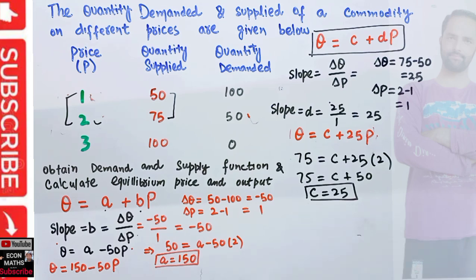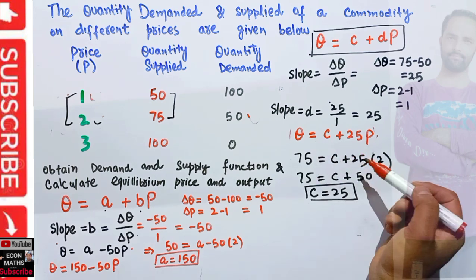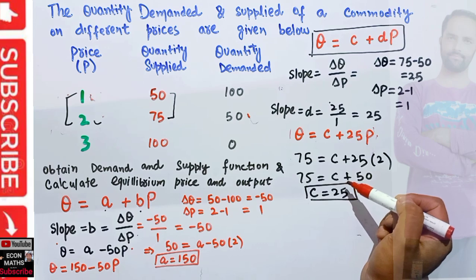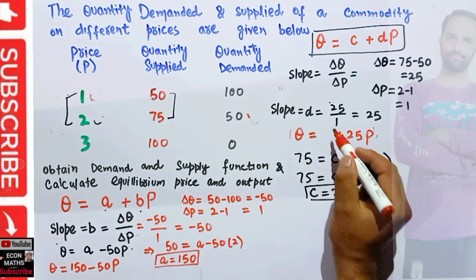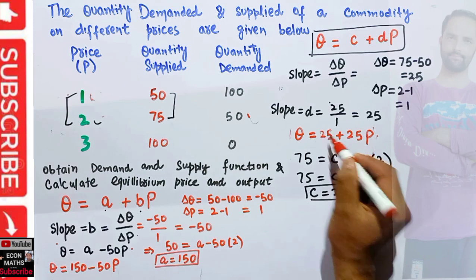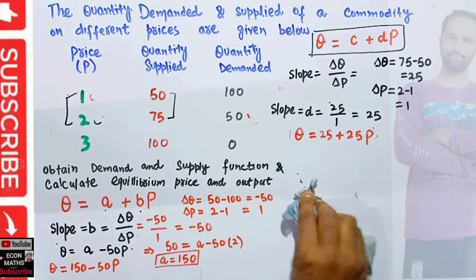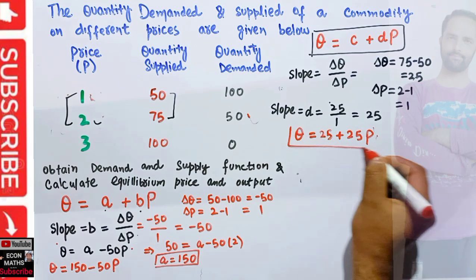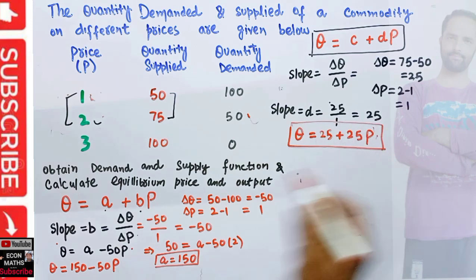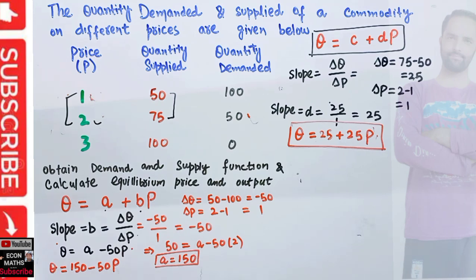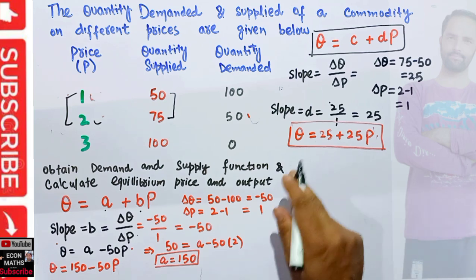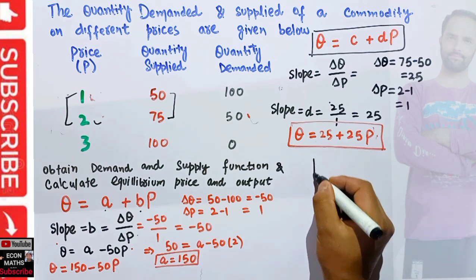Our supply function has become Q equals 25 plus 25P. This is our supply function, and Q equals 150 minus 50P is our demand function. We can also plot these on a graph.